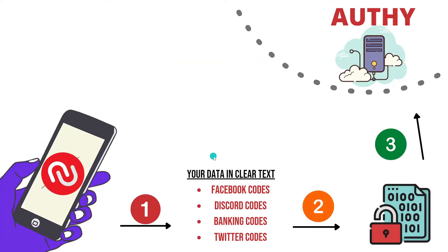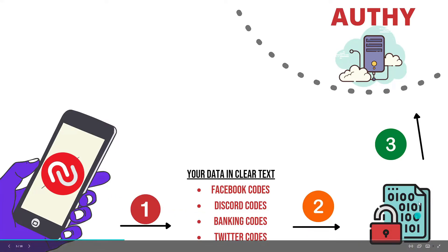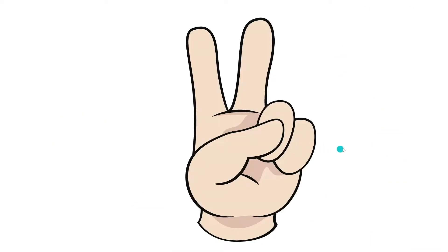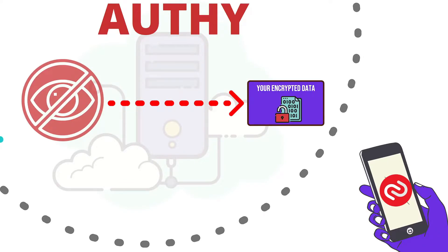Now here's the meat and potatoes of this video, so pay very close attention — go grab a pencil and paper if you want. One: when a backup takes place, your phone encrypts that data before it sends it off to Authy servers to be stored. Two: the encrypted data sent over to Authy cannot be viewed by anyone at Authy.